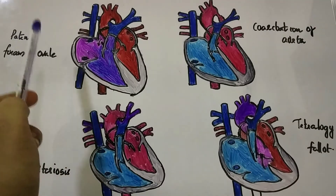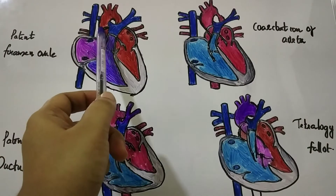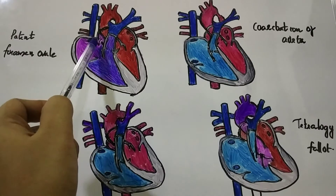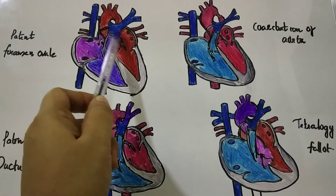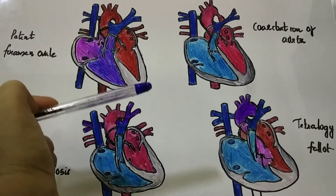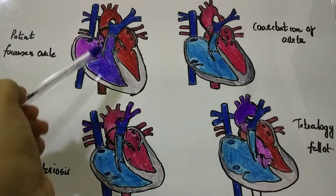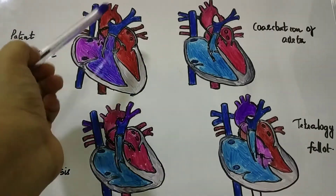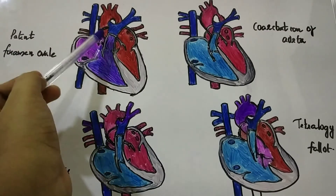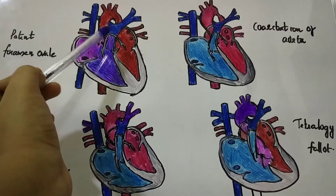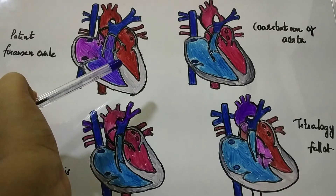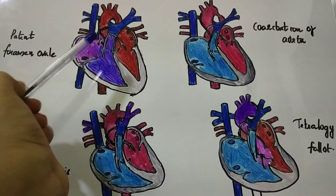The first one is the patent foramen ovale. In this condition, the septum primum usually closes immediately after birth, but in this condition it does not fuse, and as a result there is a connection between the right atrium and the left atrium. It is usually seen in 20 to 25% of the population. In most cases it is not dangerous, but in certain cases it may become dangerous, and it is closed by means of heart surgery and diagnosed by means of auscultation.